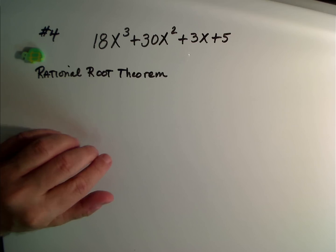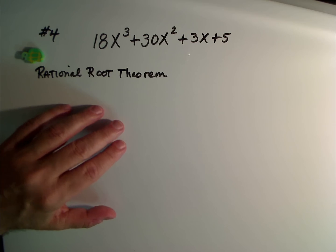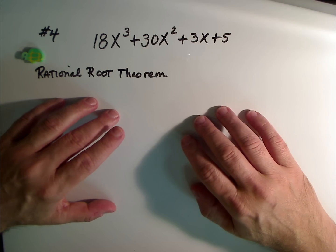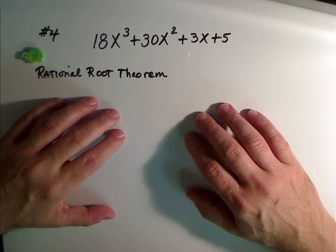Okay, so let's talk about the Rational Root Theorem when we're dealing with polynomials. Problem number four is a perfect example.